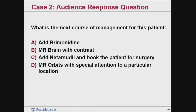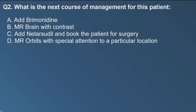The next audience response question: what's the next course of management for this patient? Would you add brimonidine? Would you select an MRI brain with contrast just to rule everything out? Would you add netarsudil and book the patient for surgery for rapid progression of visual fields? Or would you order an MRI with special attention to a particular location?